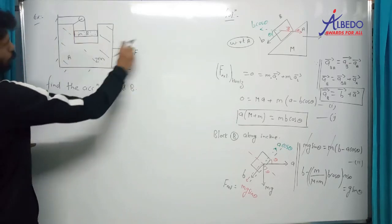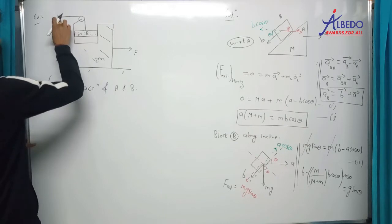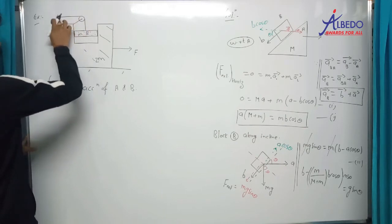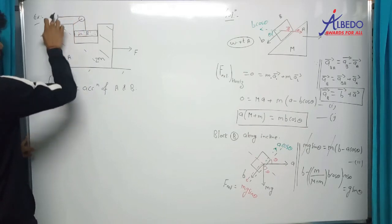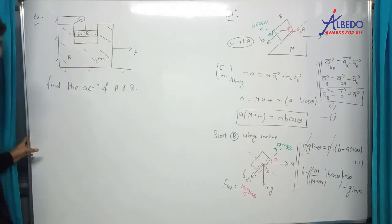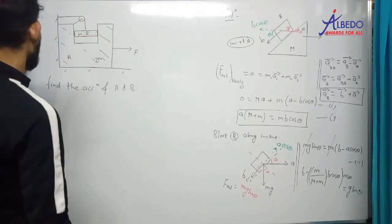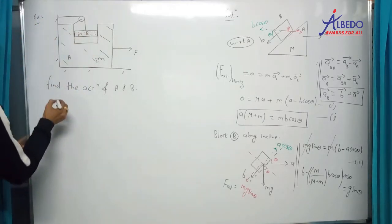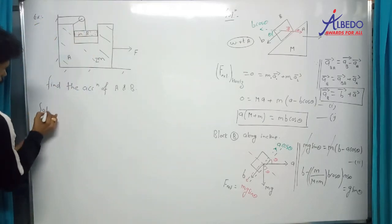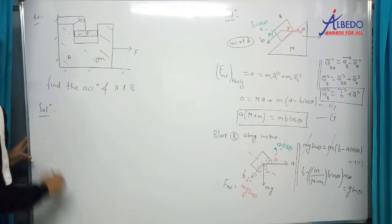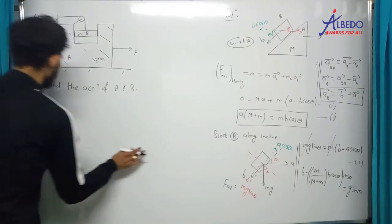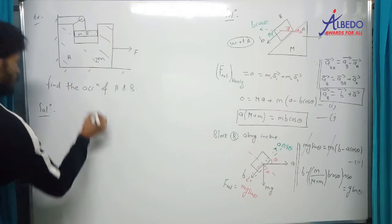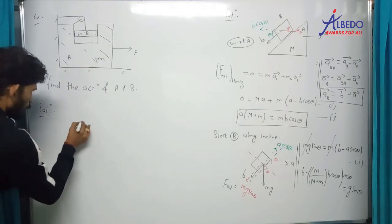यह बड़ा block है, इसको हम खींच रहे हैं. यह pulley attached है बड़े block से, और यह rigid support से string के through B connected है. अब यह आएगा — आप इसका free body diagram draw करें.